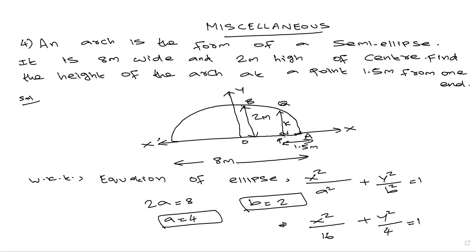The distance from the end is 1.5 meters. Total length is 8 meters, so half is 4 meters. From the center, the x-coordinate is 4 − 1.5 = 2.5 meters. So OP = 2.5 meters.